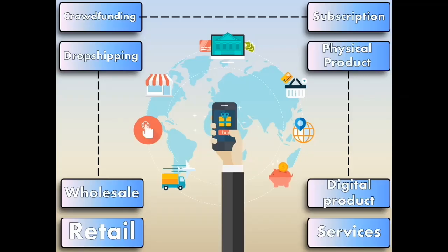E-Commerce can take on a variety of forms involving different transactional relationships between businesses and consumers, as well as different objects being exchanged as part of these transactions. The first example is Retail — the sale of a product by a business directly to a customer without any intermediaries.